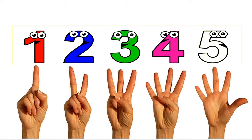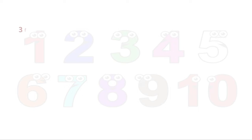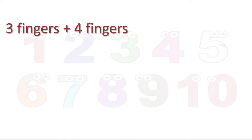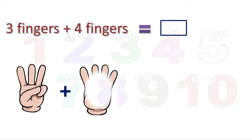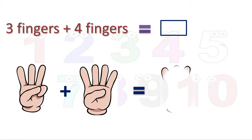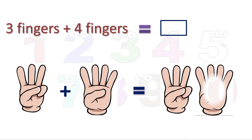See our first sum: 3 fingers plus 4 fingers is equal to how many fingers? Here you can see 3 fingers plus 4 fingers. Addition means counting together. Now we will take these two pictures — 3 fingers along with 4 fingers. We will count these fingers: 1, 2, 3. You know this — 3 fingers.